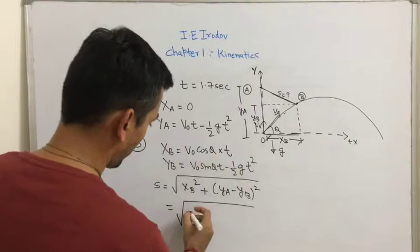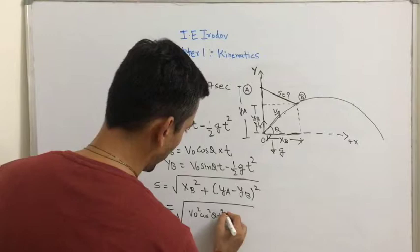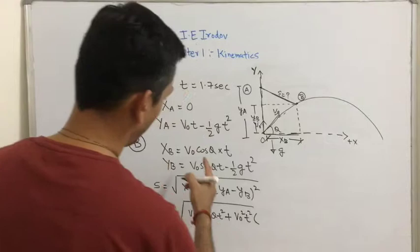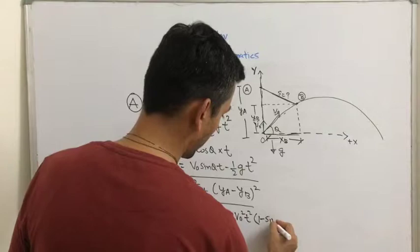When we fill up this value, where do we get? V0 square cos theta t square plus yA minus yB. So half t square they get cancelled. And V0 t comes out.